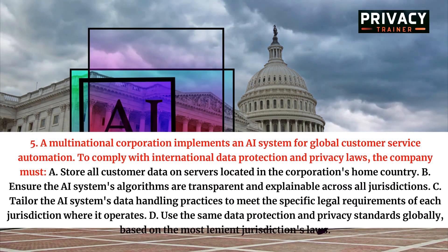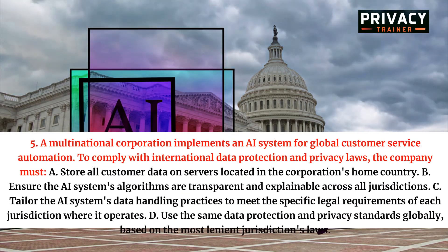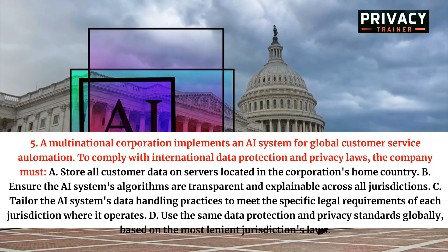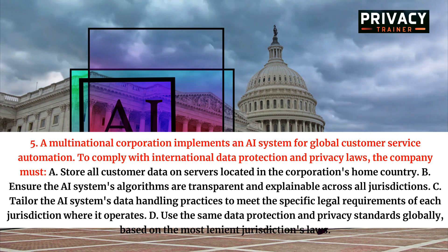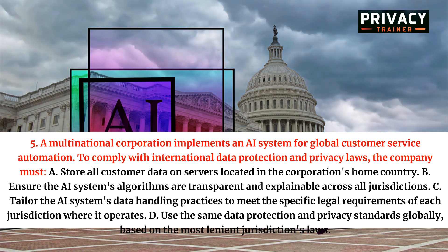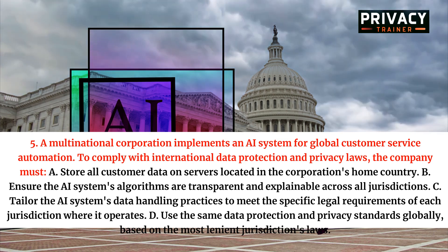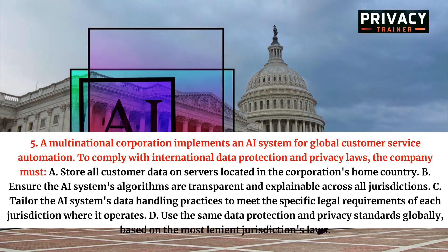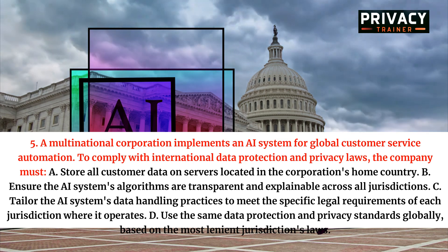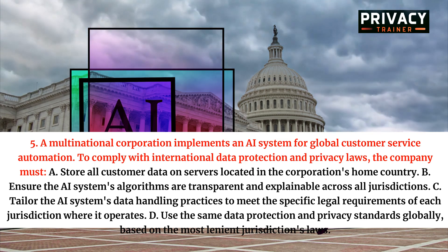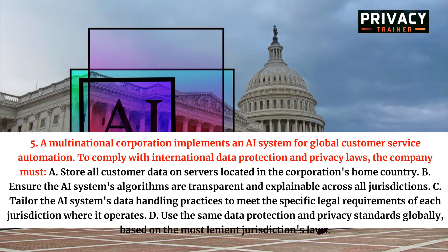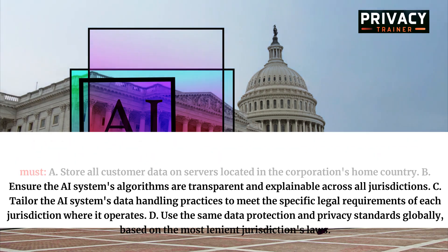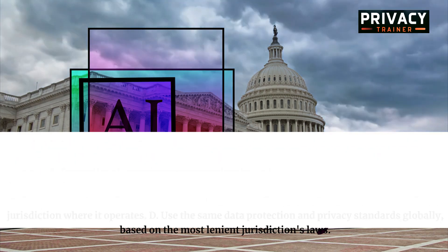Question 5. A multinational corporation implements an AI system for global customer service automation. To comply with international data protection and privacy laws, the company must: A. Store all customer data on servers located in the corporation's home country. B. Ensure the AI system's algorithms are transparent and explainable across all jurisdictions. C. Tailor the AI system's data handling practices to meet the specific legal requirements of each jurisdiction where it operates. D. Use the same data protection and privacy standards globally, based on the most lenient jurisdiction's laws.